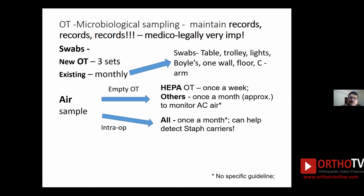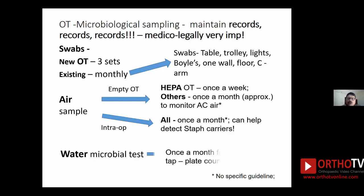Intraoperative air sampling is also recommended for HEPA filter laminar flow theaters, with once a month as the minimum recommended frequency. In my personal experience, intraoperative sampling helps pick up carriers of Staphylococcus aureus among OT staff — this is normally carried in the anterior nares and comes into the air with breathing, which can lead to surgical site infection in that theater. Water is also very important as it reaches every square inch of your OT through cleaning and disinfection processes and is used for surgical scrub. Once a month, water testing from the scrub basin tap should be done.